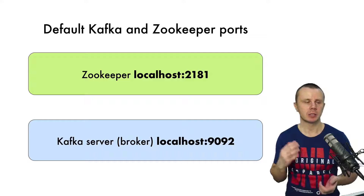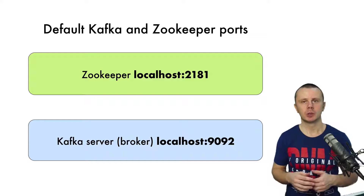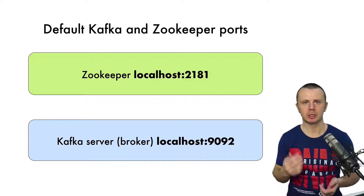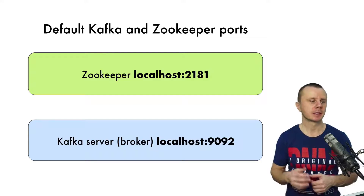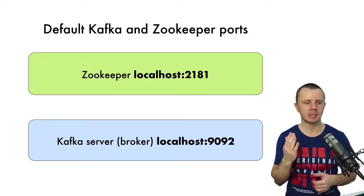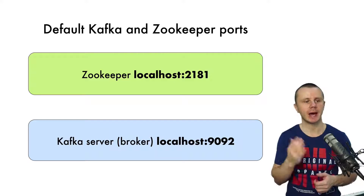If you start a ZooKeeper, it will use port 2181, and the Kafka broker or server will use port 9092.